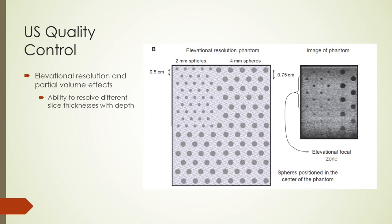Elevational resolution and partial volume effects are evaluated with the second module containing spheres. The phantom image shows the effects of partial volume averaging and variations in elevational resolution with depth. The 4 mm objects are not as clearly resolved at depth for the 0.5 cm slice thickness, while the 0.75 cm slice resolves them at all depths.